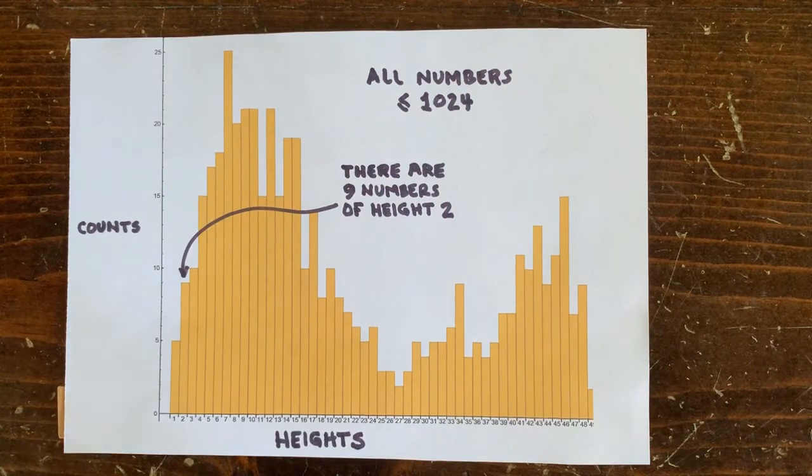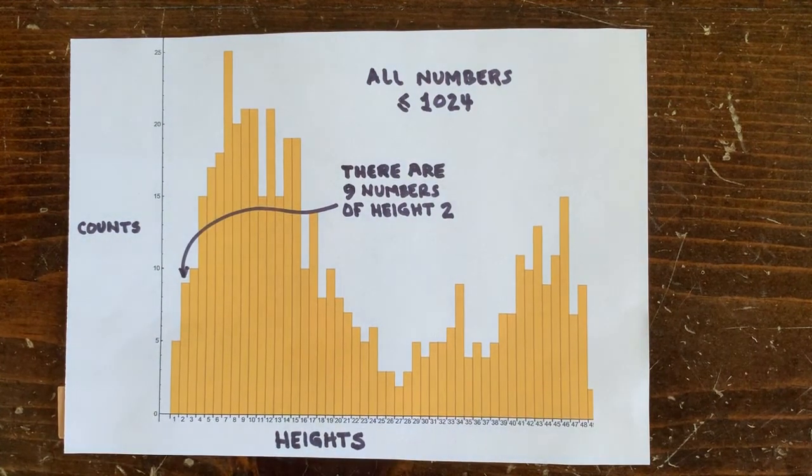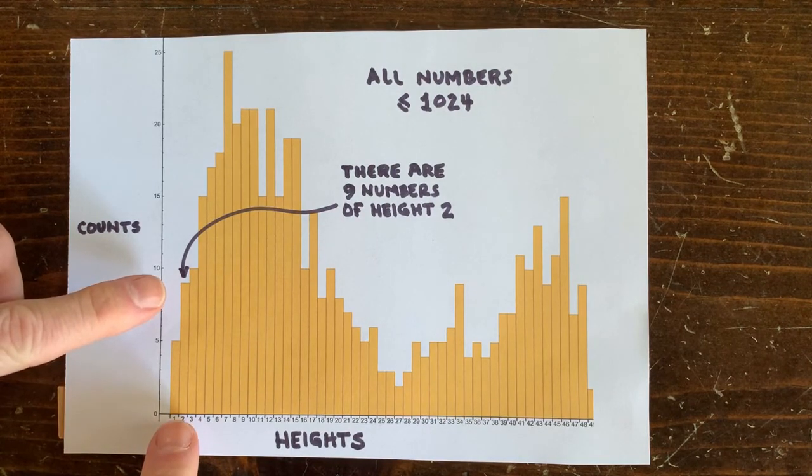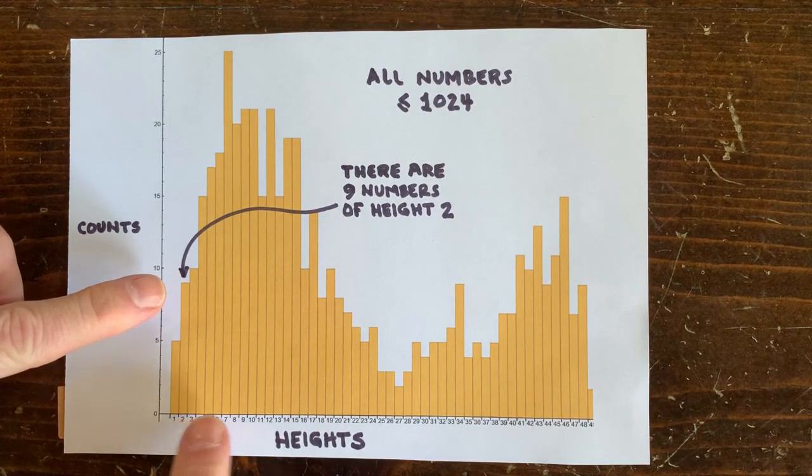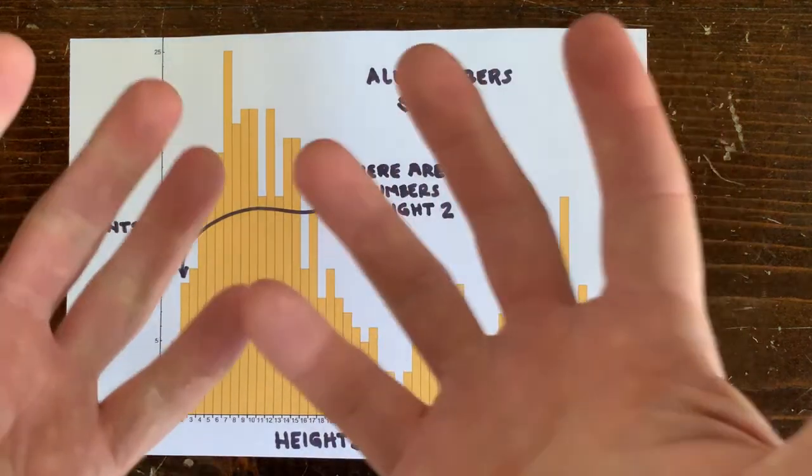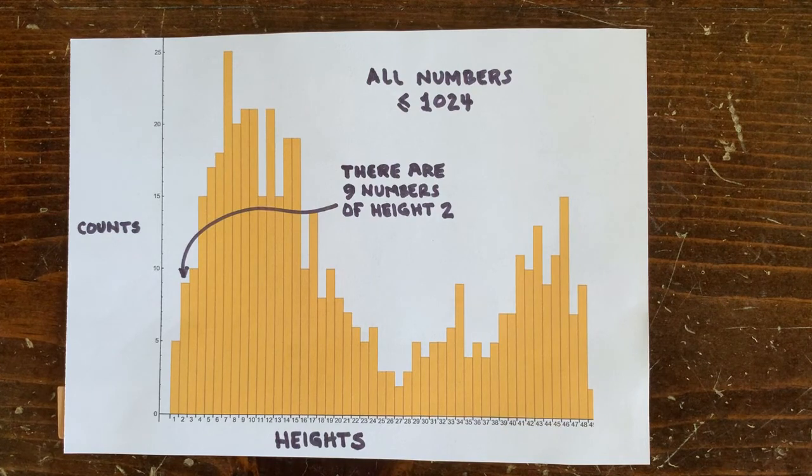Across the bottom are different heights, and we can see that there are actually 9 numbers of height 2. And here's how the rest of the numbers distribute by height. There are some height 41 numbers here, including the infamous number 27, which takes 41 steps to reach 1, ignoring evens.